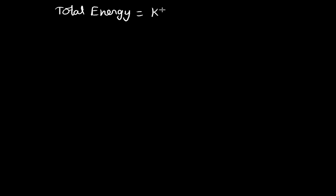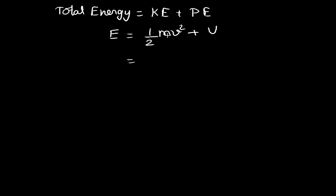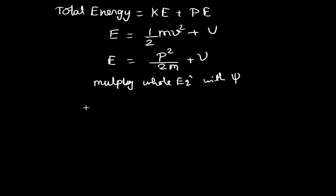The total energy of any system equals kinetic energy plus potential energy: E = ½mv² + V. Multiplying and dividing ½mv² by m gives p²/2m, so E = p²/2m + V. Multiplying the whole equation by psi: E·psi = p²·psi / 2m + V·psi.